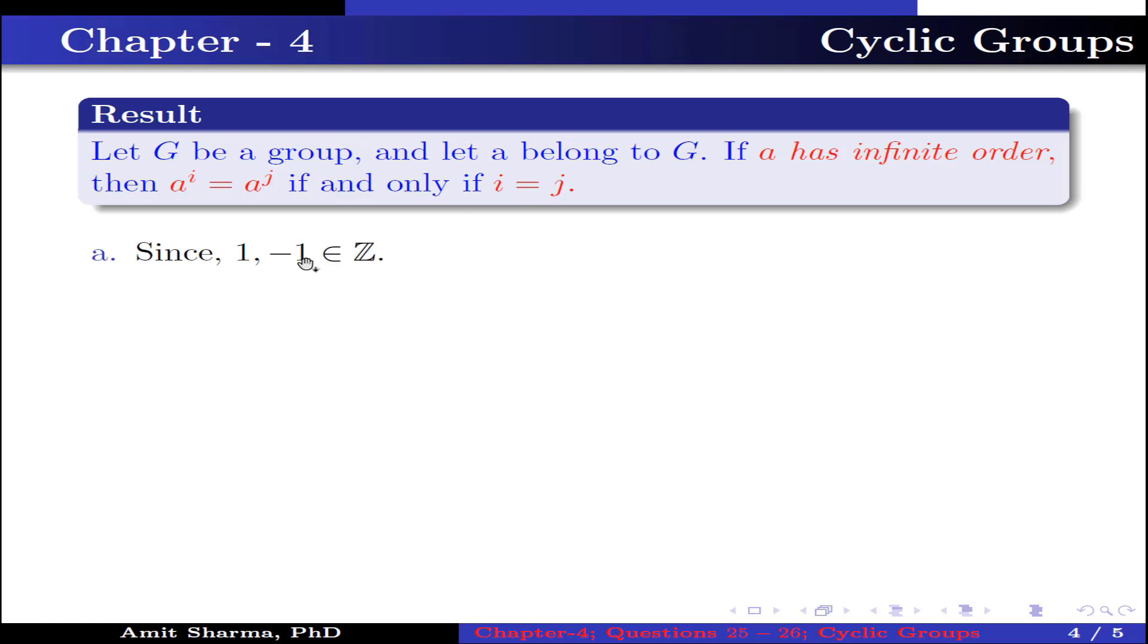Part a: Since 1, -1 belong to Z, now 1 belongs to Z such that Z contains elements of the type n·1 where n belongs to Z. This implies Z is generated by 1.